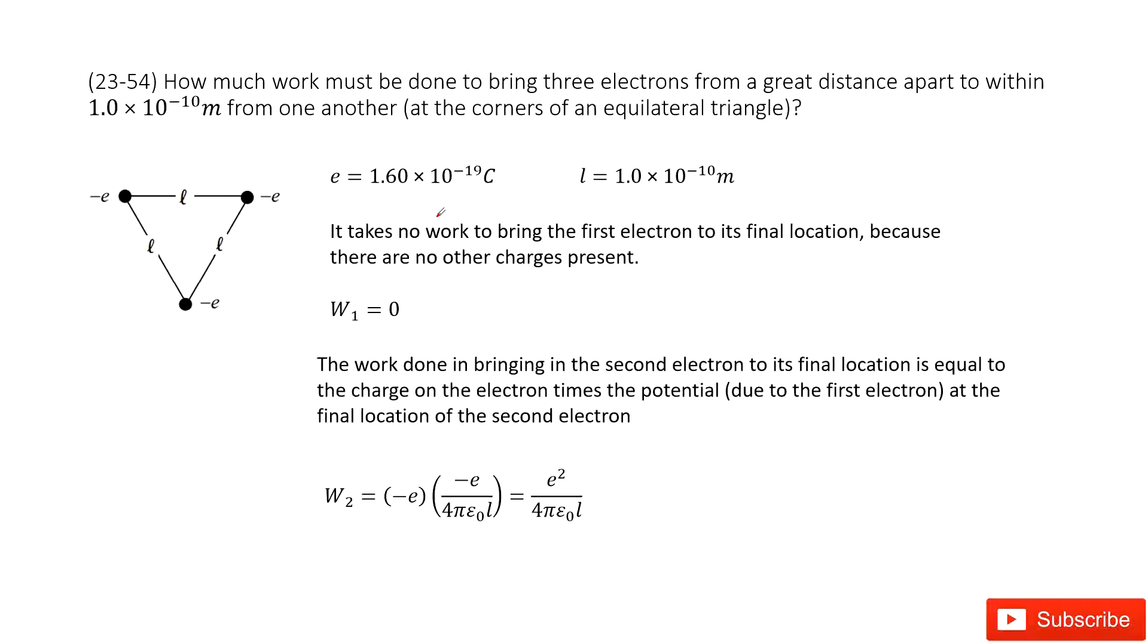We need to determine the work needed to bring three electrons from a great distance apart to within this distance from one another at the corners of an equilateral triangle. This distance we can call L.